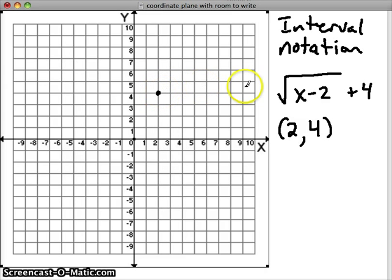And the shortcut, if a is 1, is to go up 1 over 1, up 1 over 3, and up 1 over 5 for square root functions. So we'll always get a graph that looks like that.